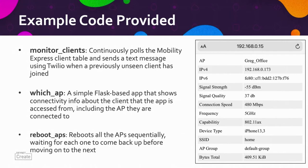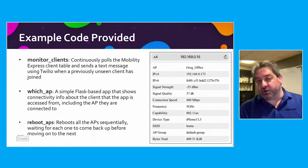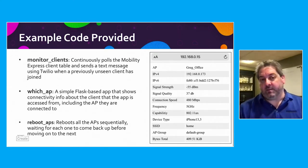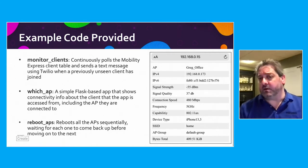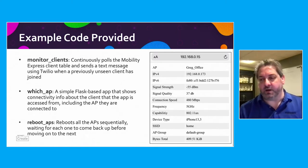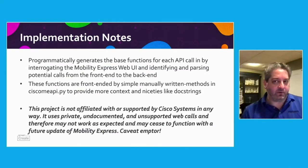One sample called Monitor Clients continuously polls the Mobility Express client table and sends a text message whenever a previously unseen client has joined. Another called Which AP is a simple Flask web application that shows connectivity info about the client — for example from your mobile phone you can see what access point you're connected to, your signal strength, and other info useful for troubleshooting or site surveys. Another sample reboots all access points sequentially, waiting for each to come back online before rebooting the next, so you can reboot all access points without causing an outage.